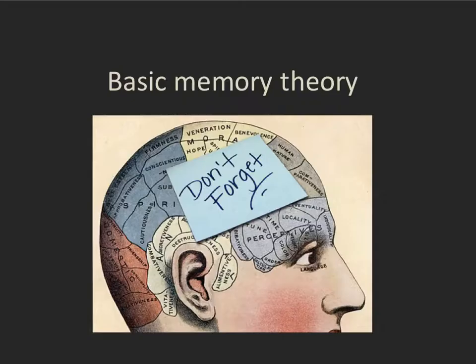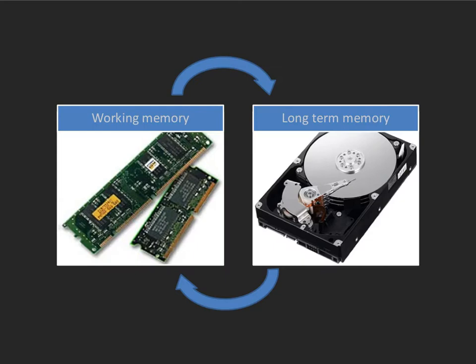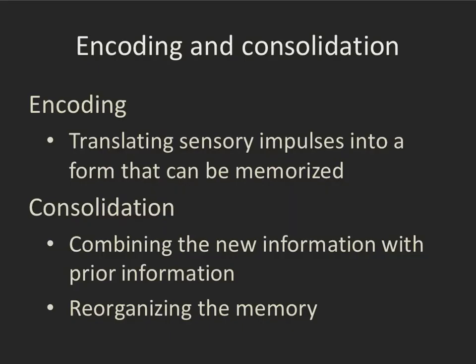I'm going to start with some very basic memory concepts that many of you may be quite aware of, but I think they bear going over again. Our memory can be divided into two different components: working memory, previously called short-term memory, and long-term memory. These two components work together to help us both store and retrieve memories. To store memories, we first have to encode them. Encoding is when we take sensory impulses — something we're reading, listening to, or a motor skill we're learning — into a form that your brain can actually store.